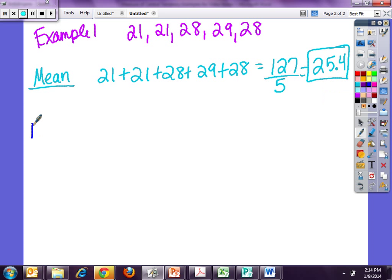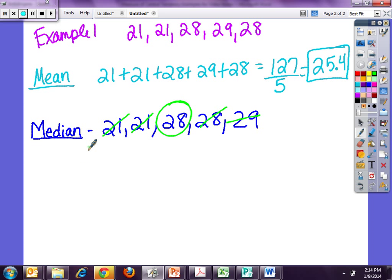Now I have my median. The number one thing I need to know about my median is that I must put my numbers in order. So I have 21, 21, 28, 28, and 29. And my median is my middle number, which is like the median in a row, middle number. So I start and I cancel out. One, one, one, one, one. My middle number is 28.